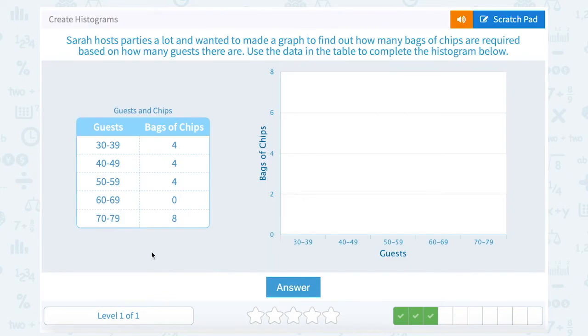Sarah hosts parties a lot and wanted to make a graph to find out how many bags of chips are required based on how many guests there are. Use the data in the table to complete the histogram below. 30 to 39 guests need four bags of chips. 40 to 49 guests was also four bags of chips. 50 to 59 same thing, four bags of chips.